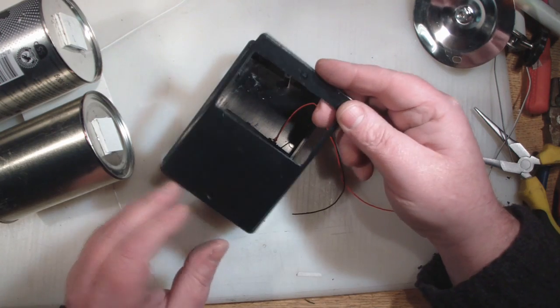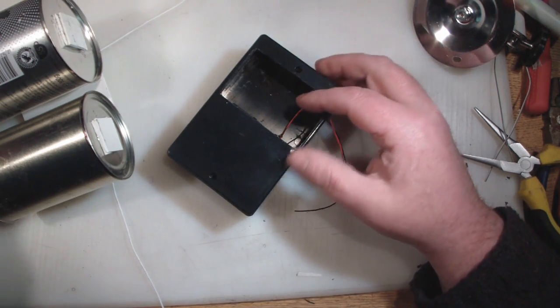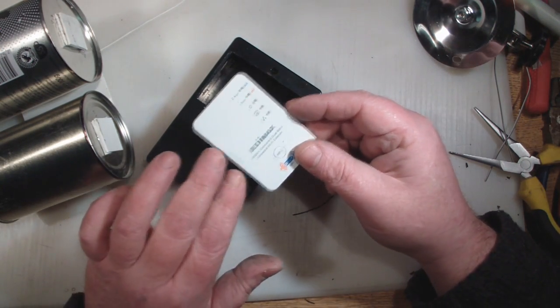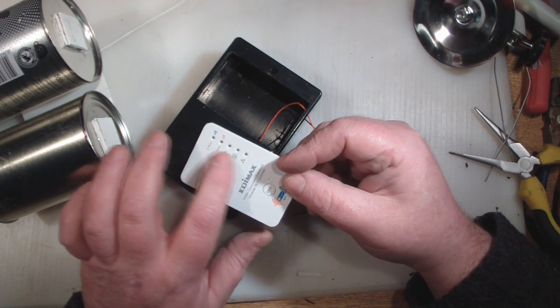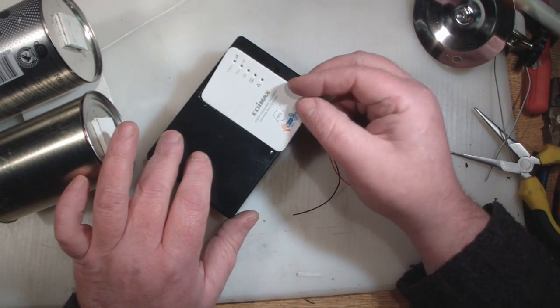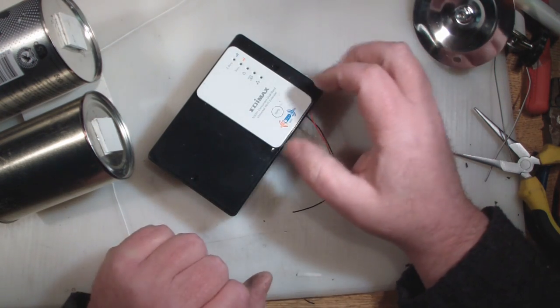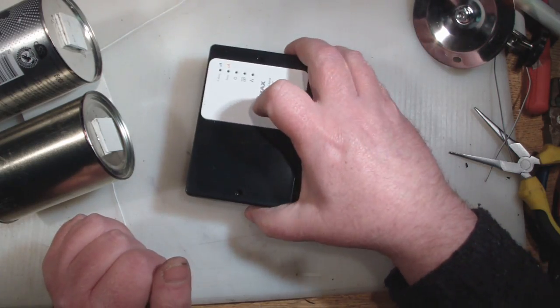As for the lid of this project box, I've got a hole in here so we can fit the cover of the original repeater itself. I really like the LED status lights so that's going to fit in there, so we can see what it's actually doing and whether it's actually powered on or not.